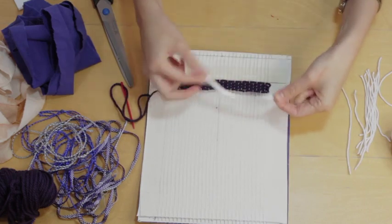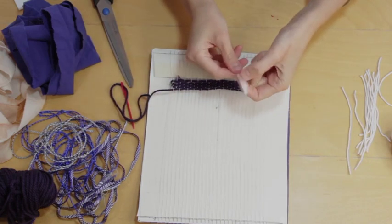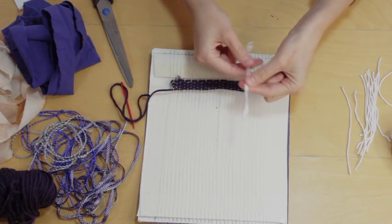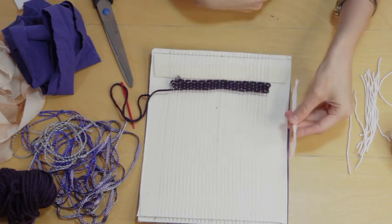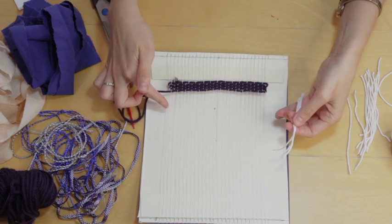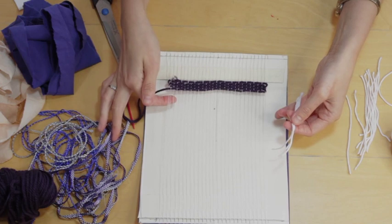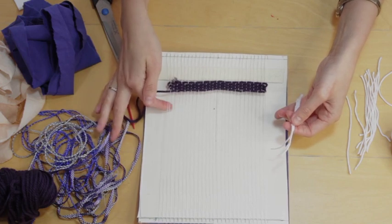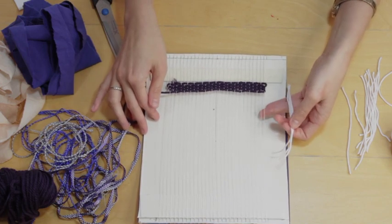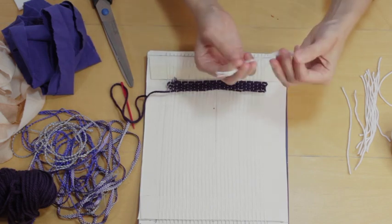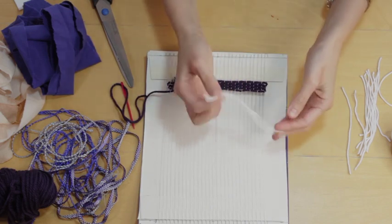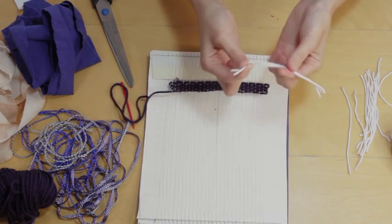So for our ryer knot tassels, I'm going to use three strands of the yarn that we've just cut for each tassel. So I'm going to need 14 tassels because I've got 28 warp threads, and I'm going to use two warp threads for each tassel.